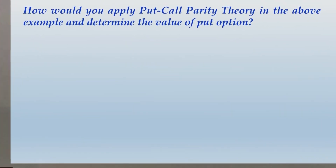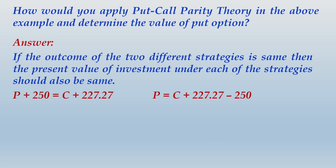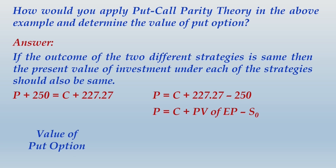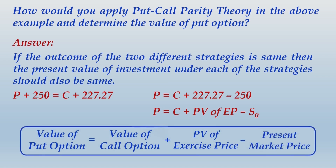Writing up the answer: if the outcome of the two different strategies is the same, then the present value of investment under each strategy should also be the same. P + 250 = C + 227.27. Therefore, value of P = C + 227.27 − 250. In variable form: value of put option = value of call option + present value of exercise price − current market price (S0) of the equity share.